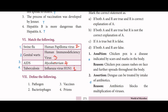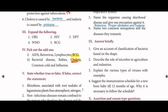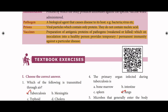Define the following. First, pathogen — from page number 270. A pathogen is a biological agent that causes disease to its host. Examples: bacteria, virus, etc.